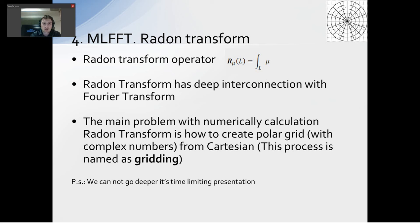Radon Transform has deep interconnection with Fourier transform. The main problem with numerical calculation of Radon Transform is how to create polar grid from Cartesian grid. We have an integer lattice, and we know the value in this grid here. But we want to know the values in a polar grid.